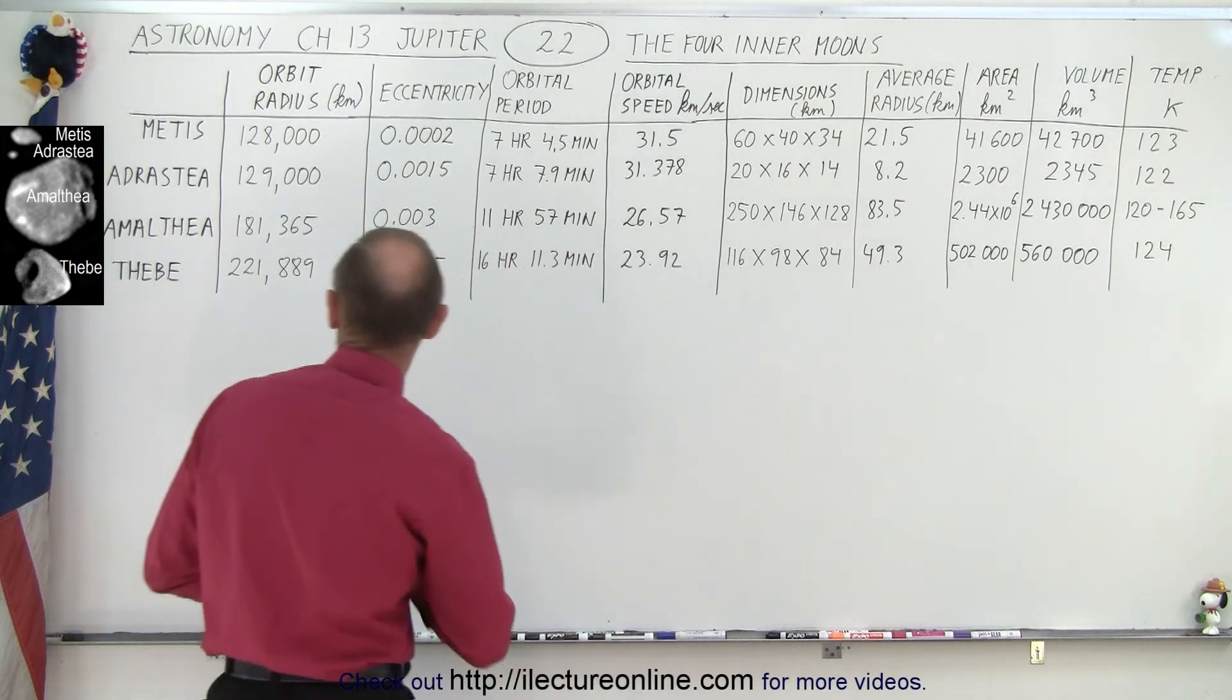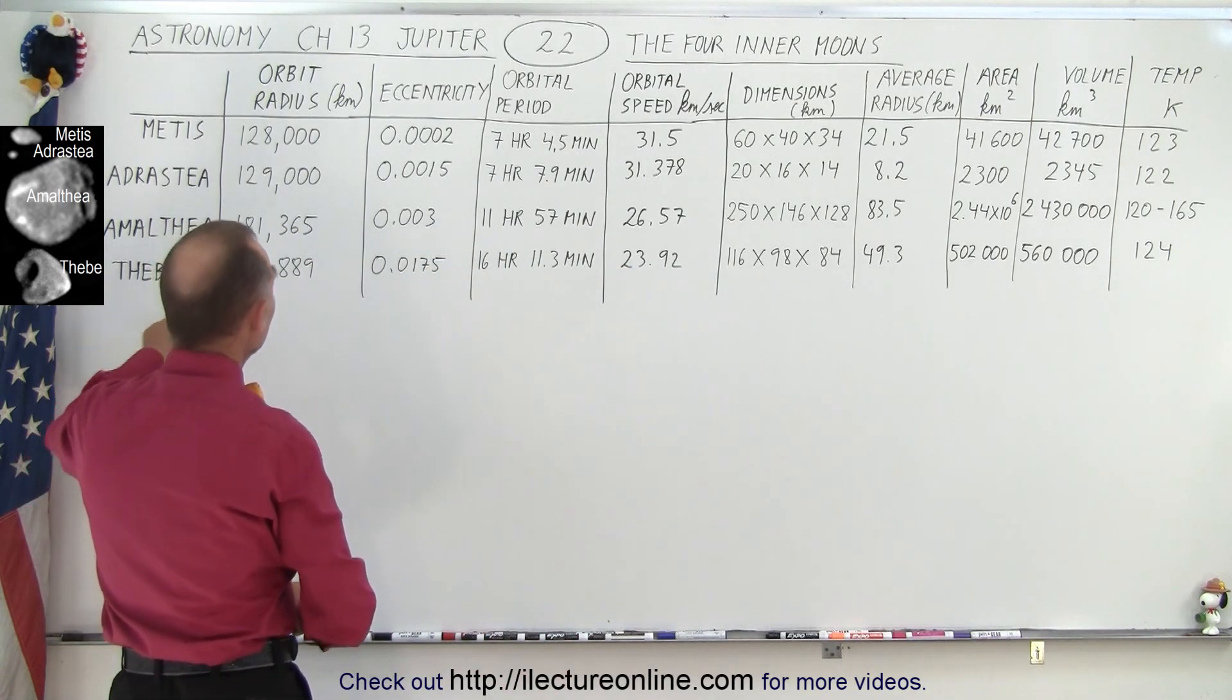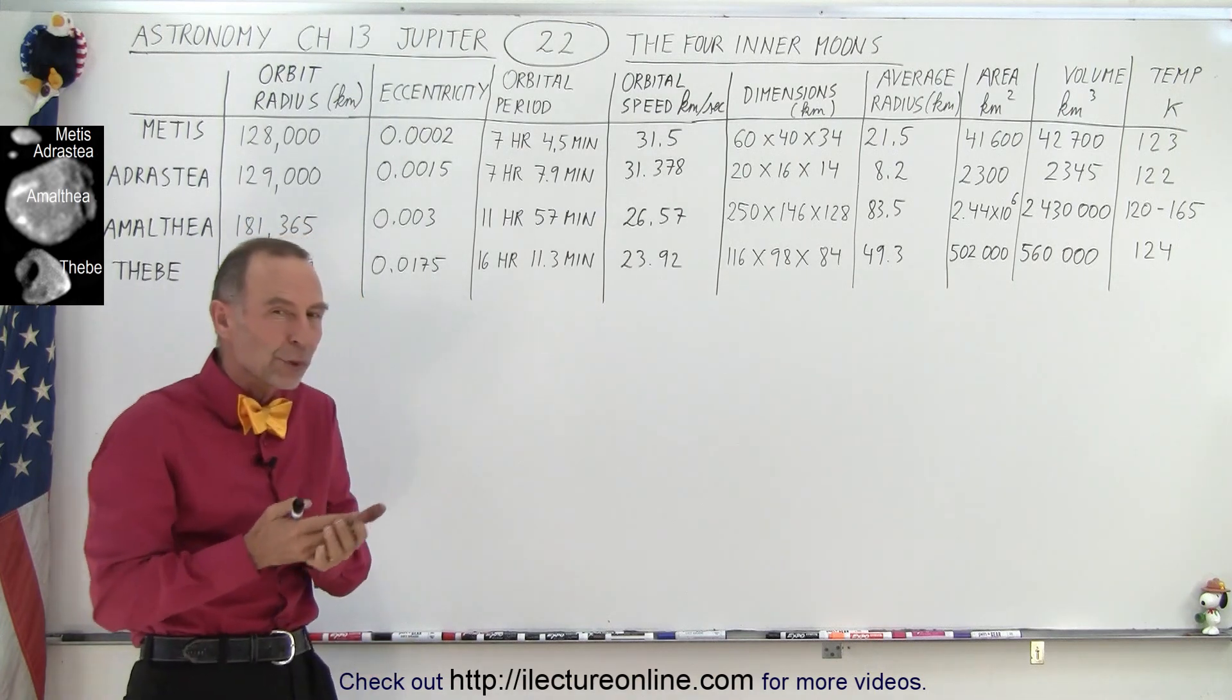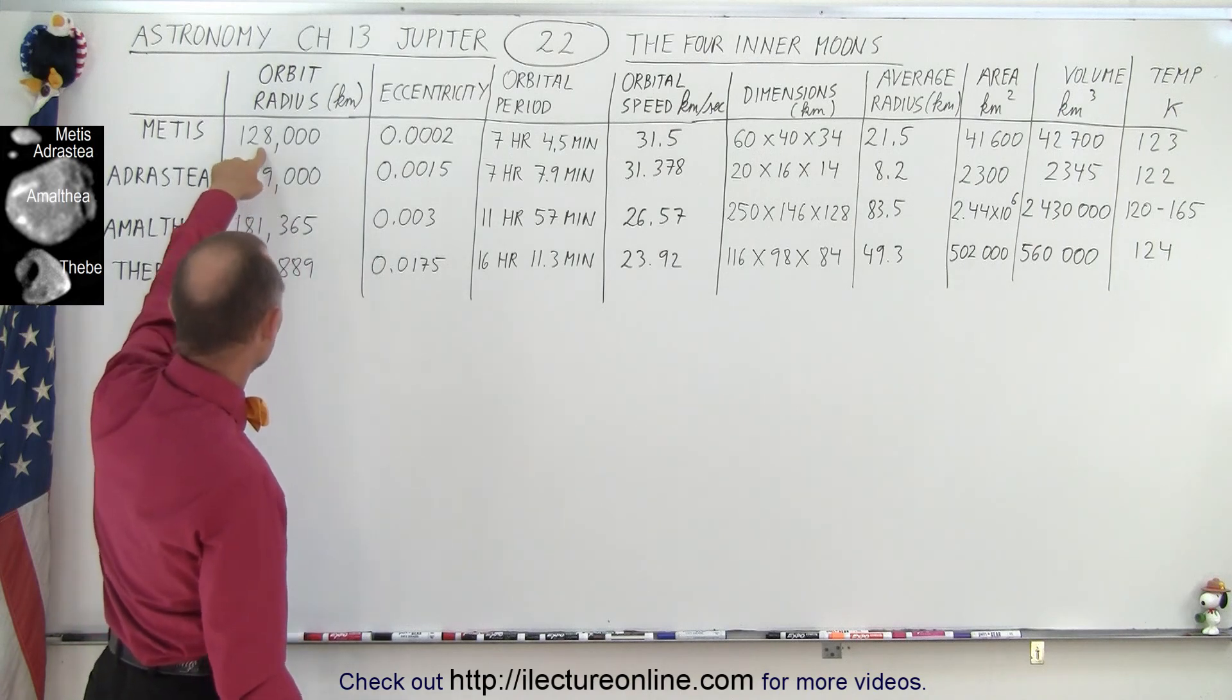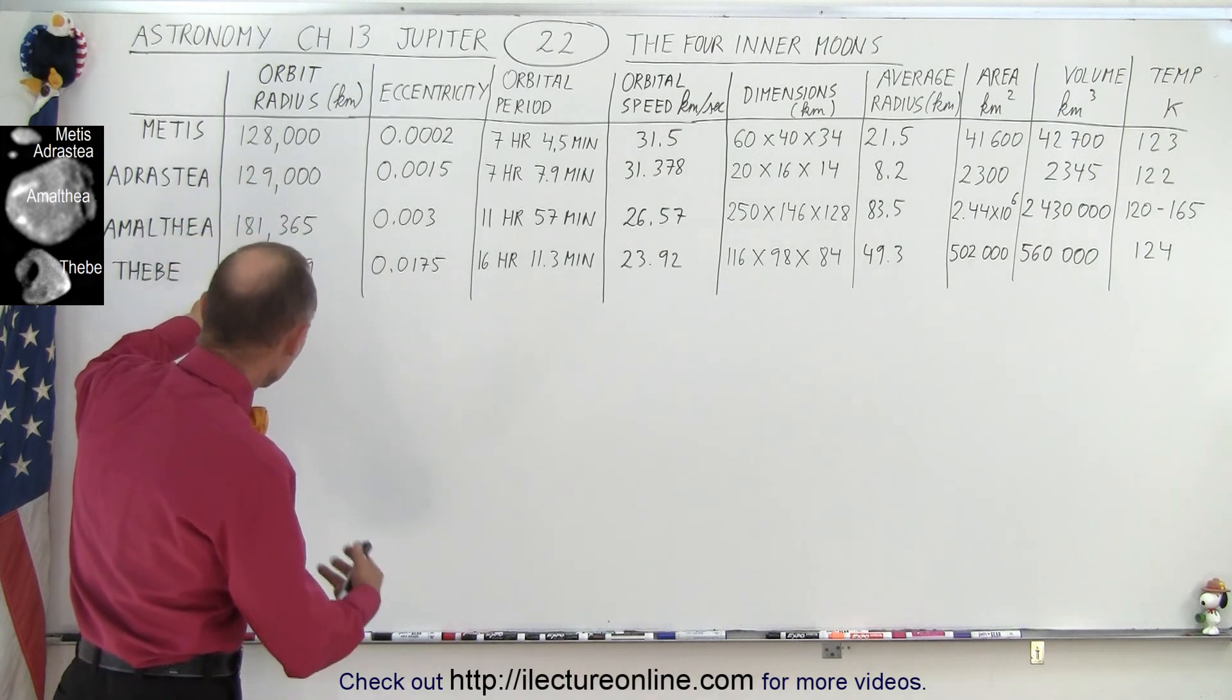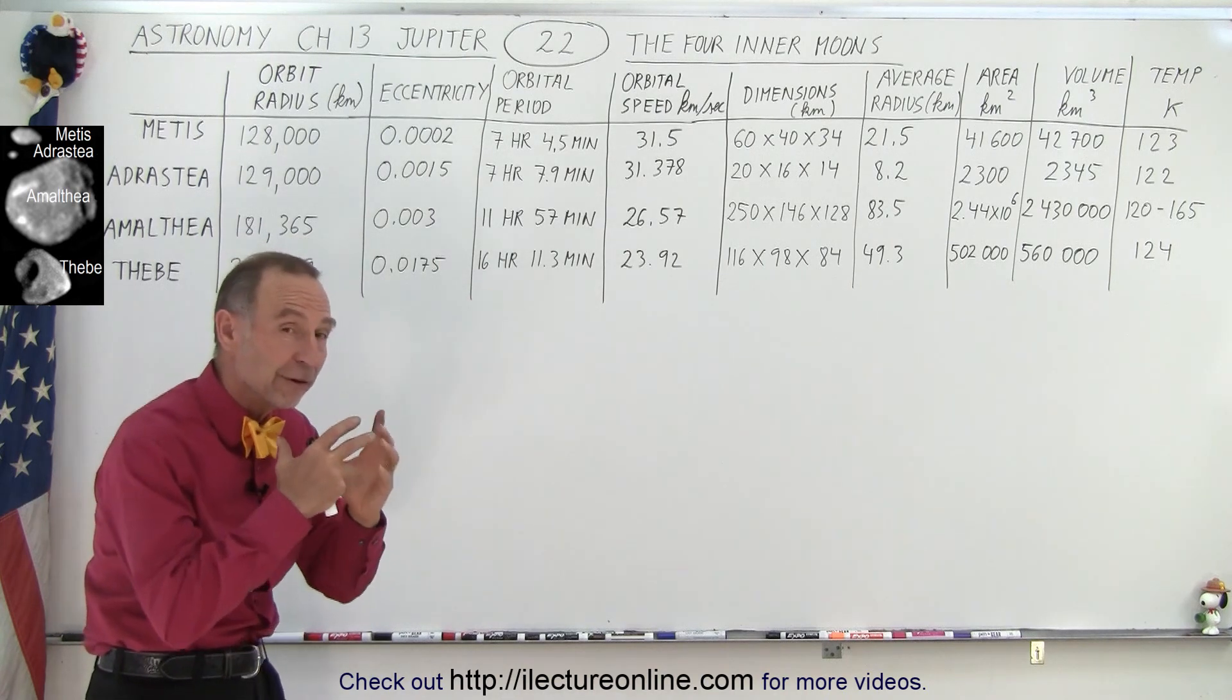The four moons we're dealing with are Metis, Adrastea, Amalthea, and Thebe. And they're all within about two to three times the radius of Jupiter. It's a little bit less than twice, and this is about three times the radius of Jupiter. So they're all very, very close.